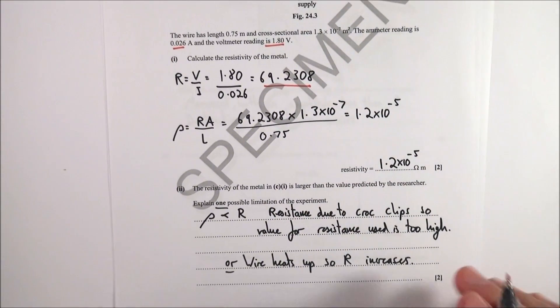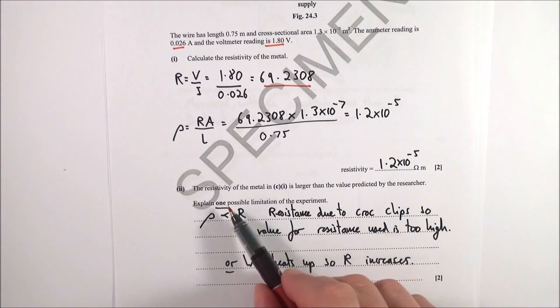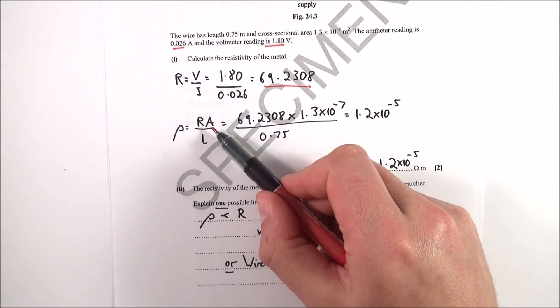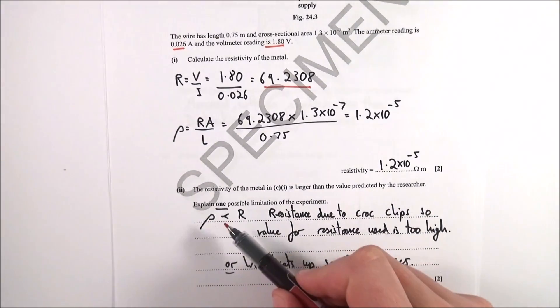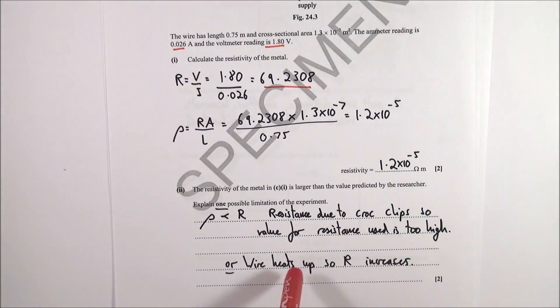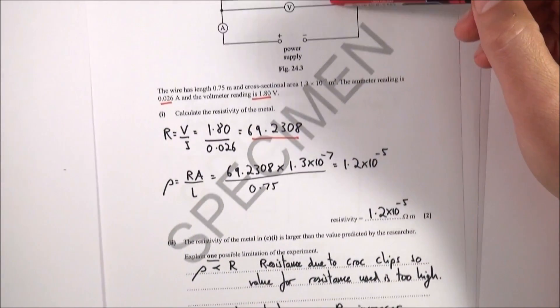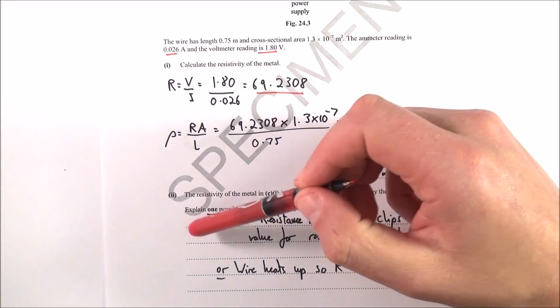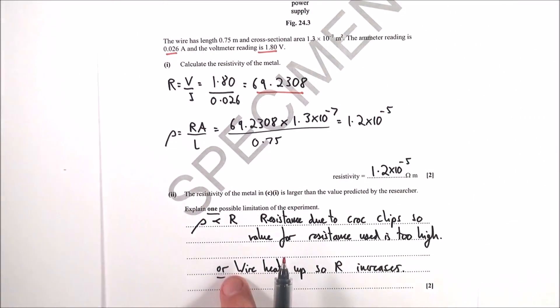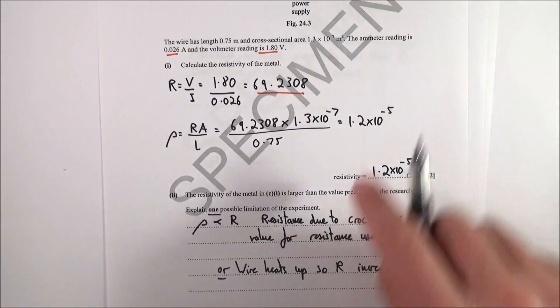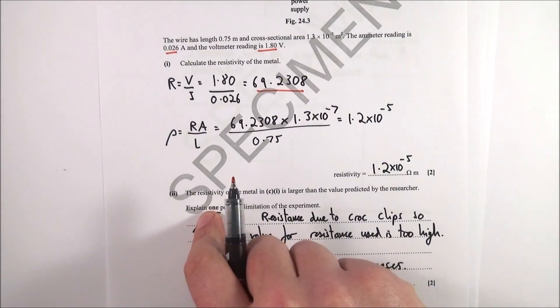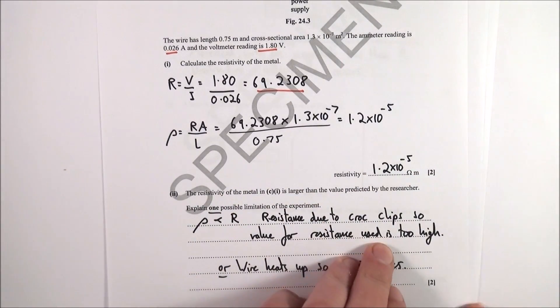Next bit: the resistivity of the metal is larger than the value predicted by the researcher. Explain one possible limitation. If it says one, just do one. Provided we have the same length of wire and the same area, that means the resistivity is proportional to the resistance that we've measured. You might say that perhaps there's resistance due to the crocodile clips that you have in the circuit, and that means the resistance value is too high, which means your resistivity is too high. Or perhaps you might talk about the fact that maybe the wire heats up, so if you have a current flowing through the wire, the resistance increases with temperature and that would then give you a higher value for your resistivity. Basically take one of those and explain it really well.